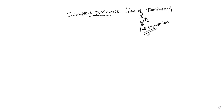We will see what we understand by full dominant, half dominant, and incomplete dominance. Let's consider an example of incomplete dominance, and then we will move on to the molecular level. There is a plant known as snapdragon, and incomplete dominance is clearly visible in this snapdragon.